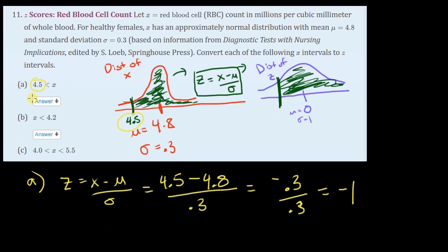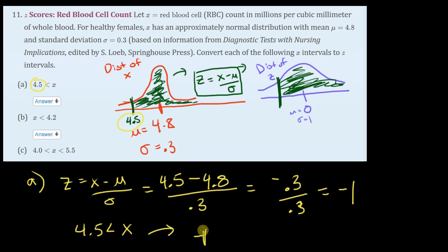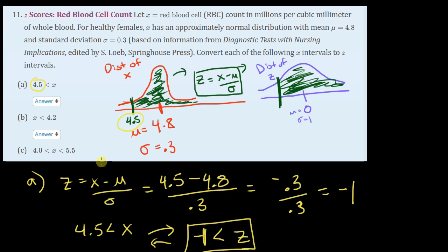So what's my interval? I used to have 4.5 less than X, or X is more than 4.5 — same thing. The way I would rewrite this: instead of 4.5, now I have negative 1; instead of X, now I have Z. So these two intervals are exactly equal to each other. This is the conversion they wanted — that's my answer to part A.